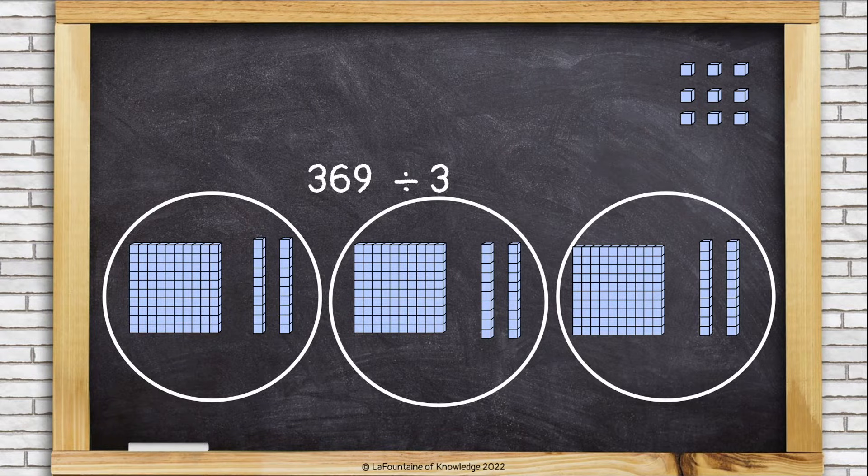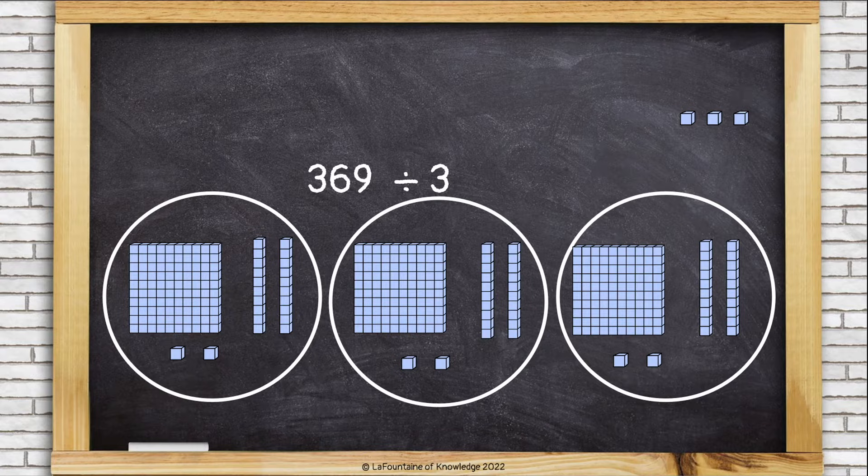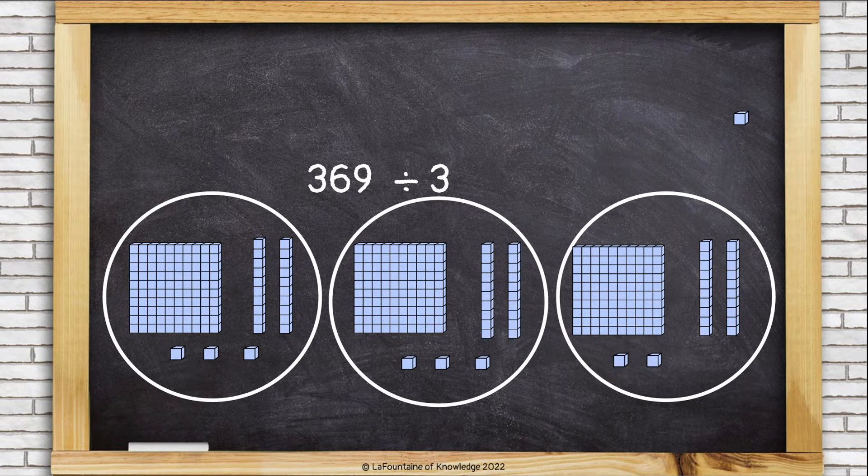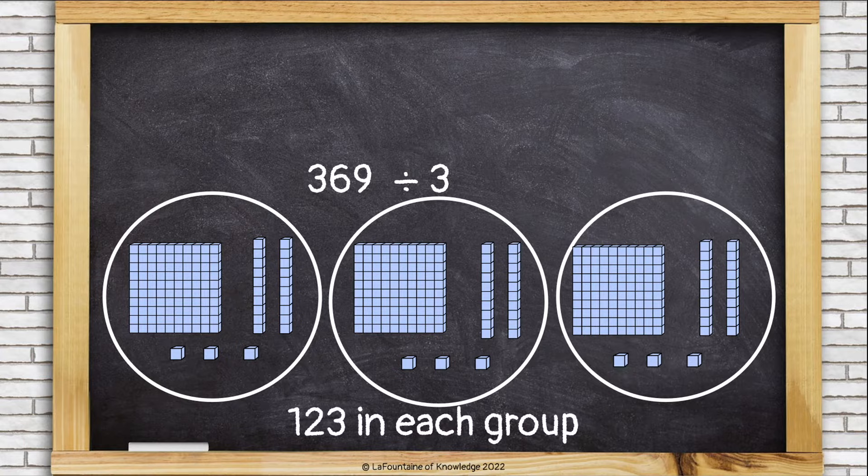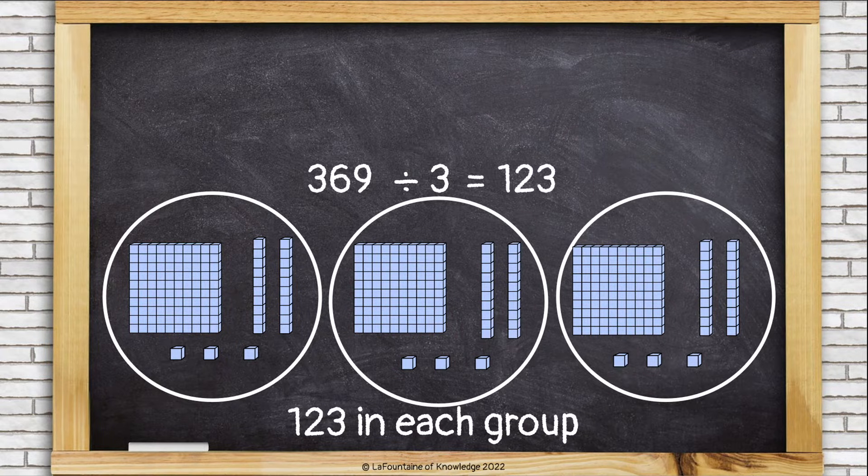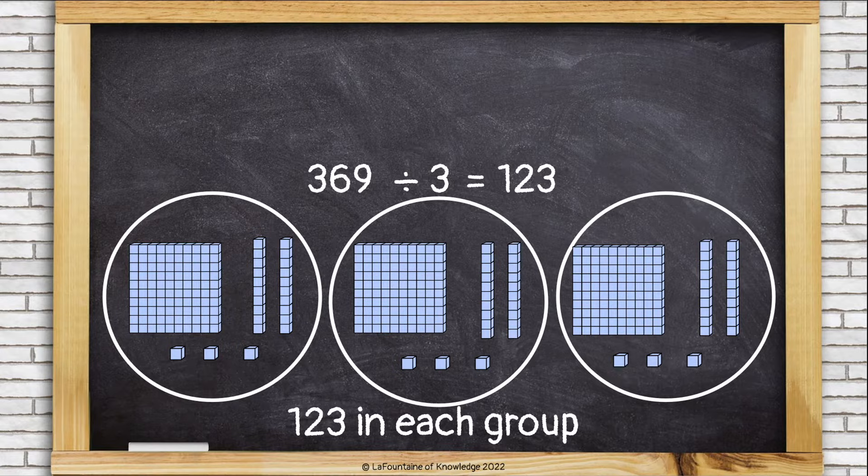And now let's divide up our ones. We'll give them each one one at a time until we're all out of ones, making sure that each group stays equal. Okay, now I can see 123 in each group, and that is the answer to my division problem, 123.